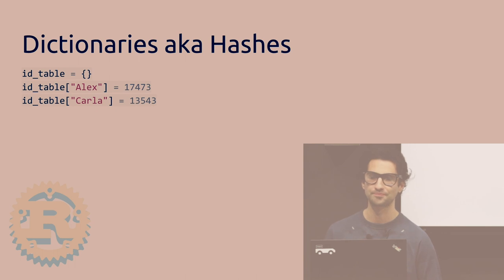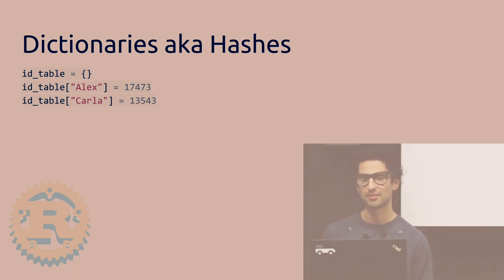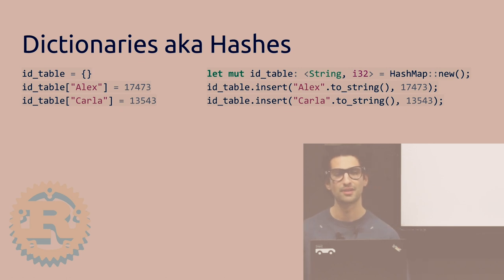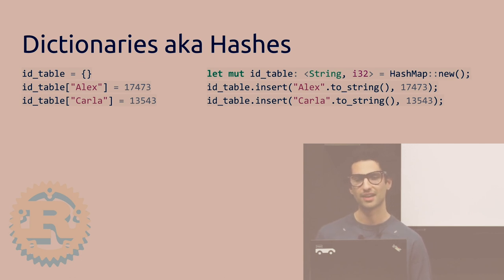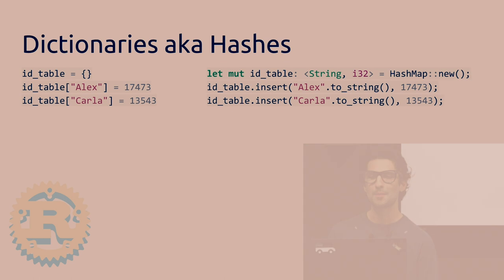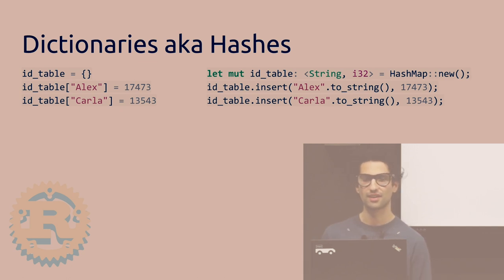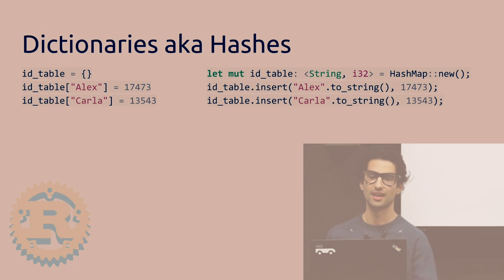Let's talk about dictionaries. In Python, a dictionary in this example maps a person's name to an ID. In Rust it's called a hash map. You have to make it mutable because you're changing it. You use angle bracket syntax to specify that the key is a string and the value is an integer. Instead of bracket assignment, you use the insert function — first argument is the key, second is the integer. You also have to call .to_string() on a string literal because you can't just put a string literal where the String data type is expected.